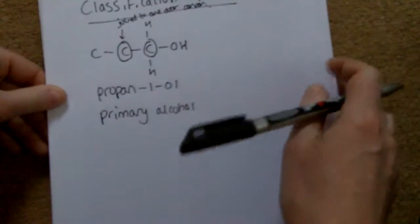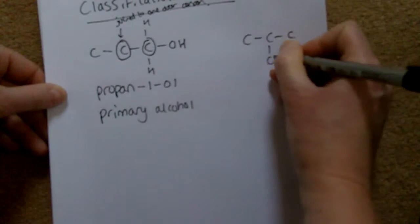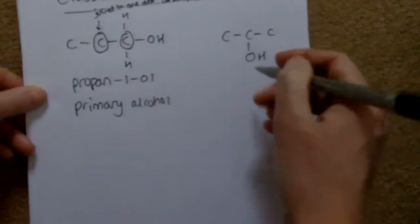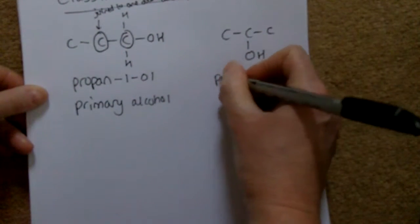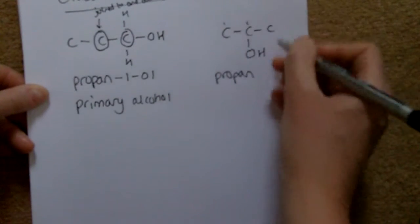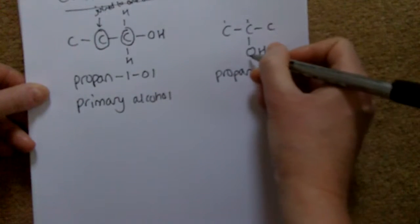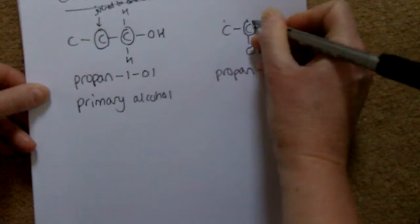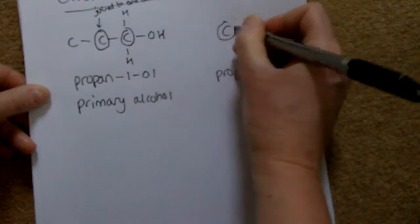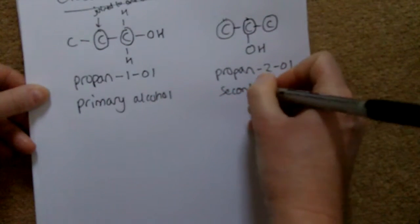Let's try another one — be careful with the connectivity to your OH. This molecule is propan-2-ol. The carbon joined to the OH is joined to two other carbons, so that is called a secondary alcohol.